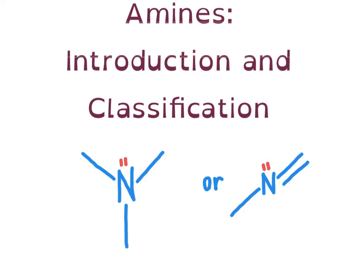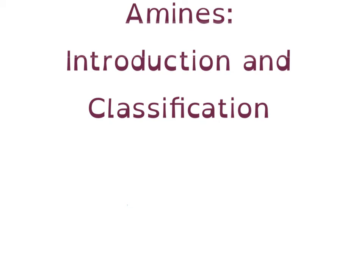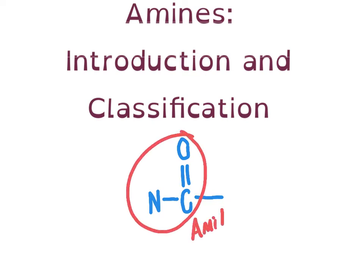What amines are not is a scenario where you have a nitrogen atom that is directly connected to a carbonyl group — that instead will be referred to as an amide group (A-M-I-D-E). So if you see a carbonyl directly connected to a nitrogen, classify that as an amide, not an amine. In other scenarios where you see a nitrogen not directly connected to a carbonyl, that nitrogen is part of an amine group.